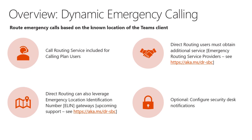As an overview, dynamic emergency calling refers to the ability for Teams to route an emergency call based on the known location of the Teams client. When using calling plans, the call routing service for dynamic emergency calling is automatically included. If you are using direct routing, a direct routing environment must obtain an additional service through what are known as emergency routing service providers. You can see the current list at the aka.ms link on the page.